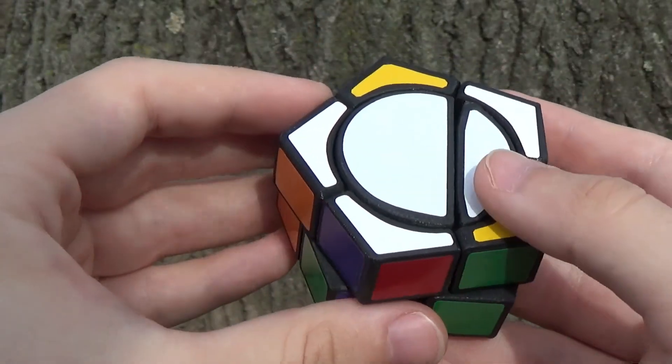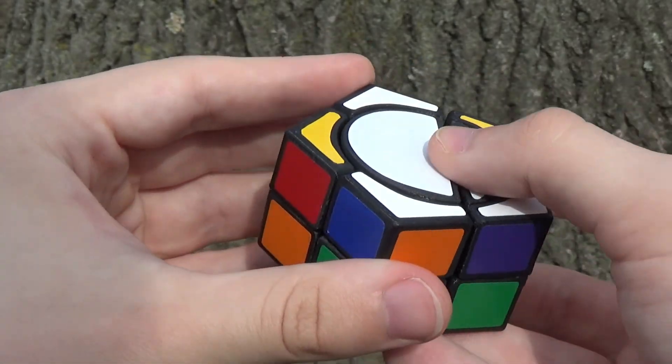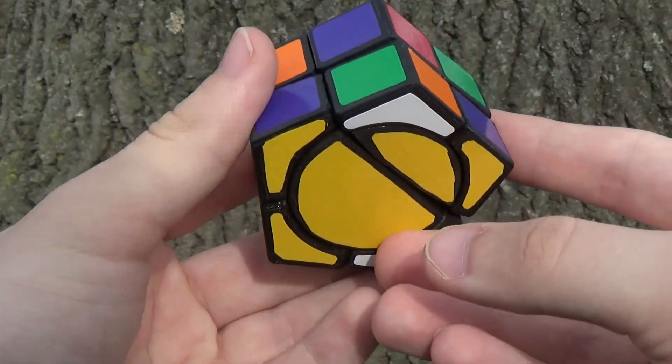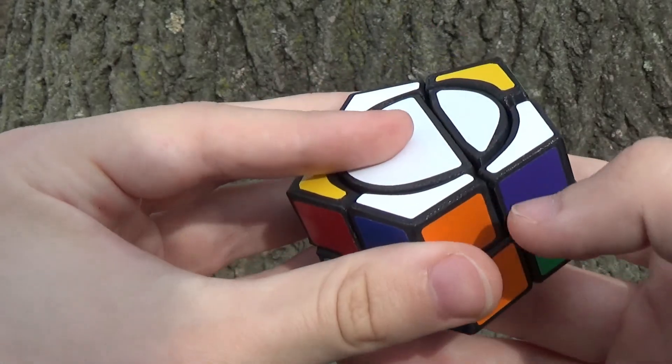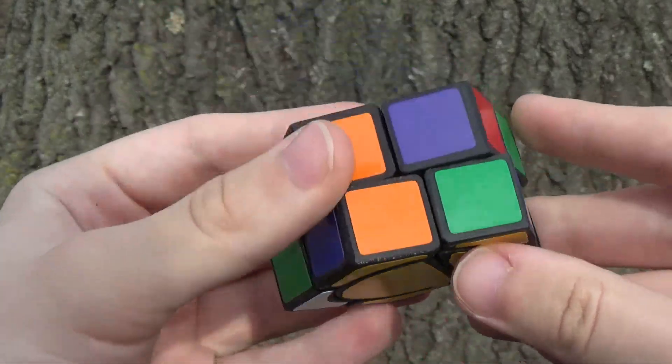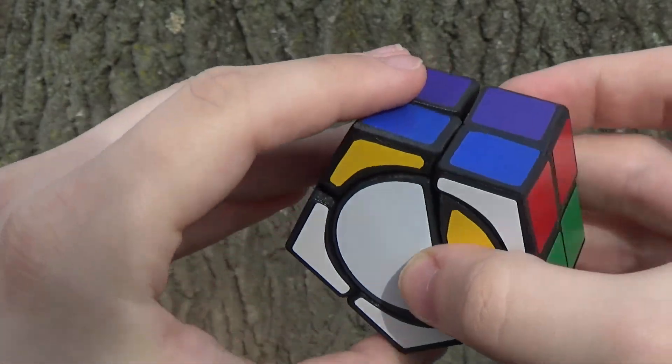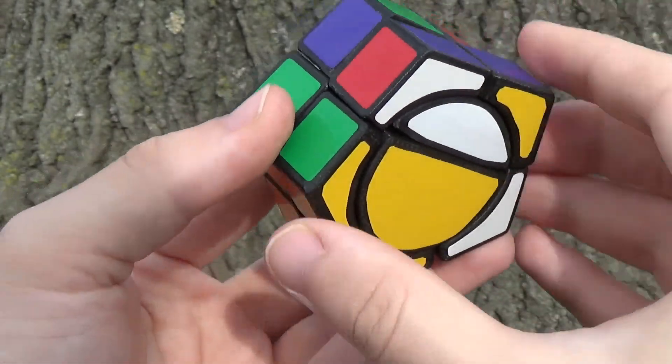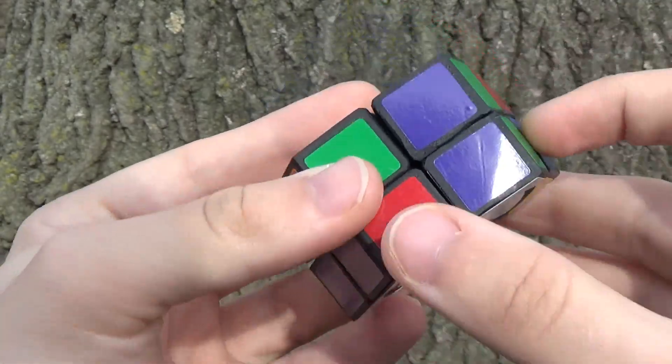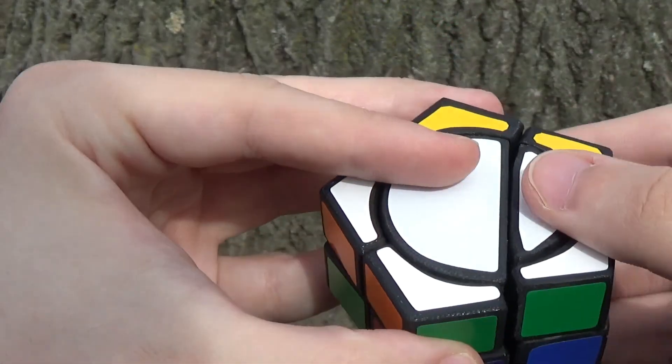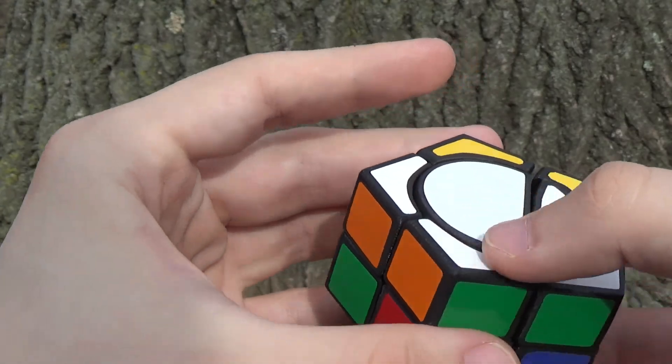All right, it looks like a good scramble to me. So the first step I'm going to do is pair up any two pieces. So here's an orange. Here's a white orange. Put them together, and then put them here. Now let's look for the white green. It is right here. No, it isn't here. So let's put it there, and then bring it up to these pieces. And so now we have a trio.